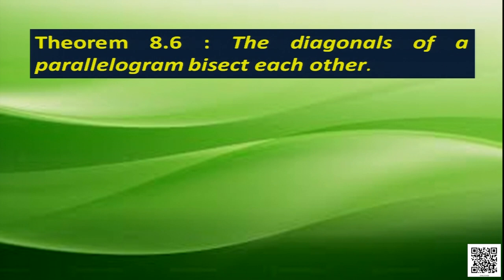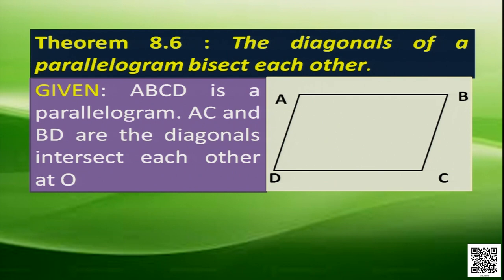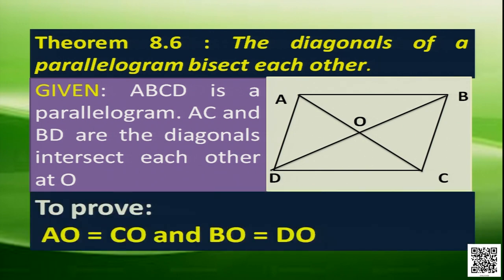To prove this, let's have a figure. This is a figure of a parallelogram ABCD. AC and BD are the diagonals which intersect each other at O. Now, what to prove? We have to prove that the diagonals of the parallelogram bisect each other, that means AO is equal to CO, and BO is equal to DO.